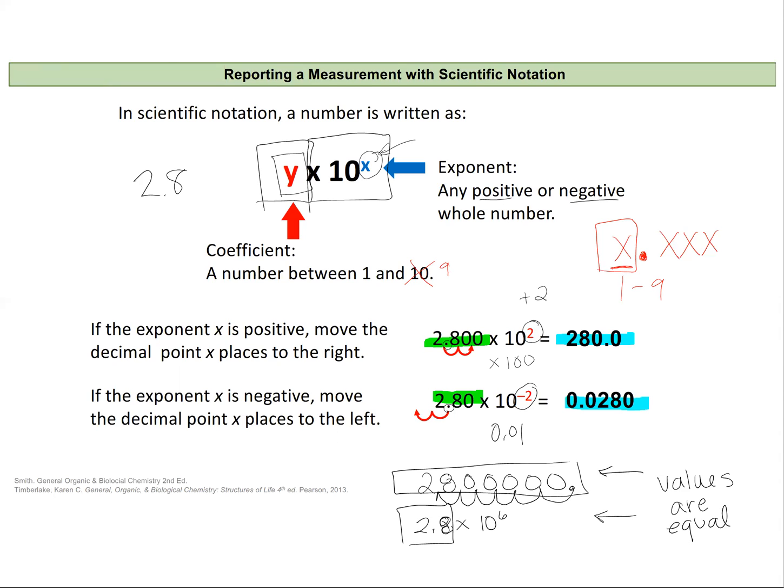Because if I had something written as 28 times 10 to the fifth, I could write that also as 2.8 times 10 to the sixth. And so we're going to want to keep this same format to be consistent when we discuss and report numbers.